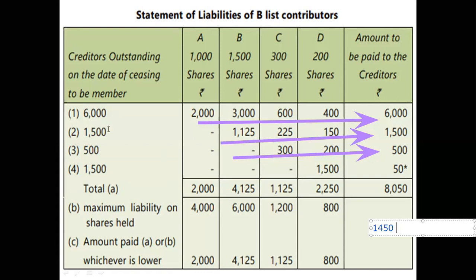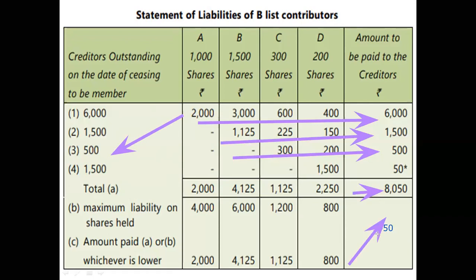9500 rupees — incremental. 9500. And the recovery: 8050. 1450 — the recovery is not able to pay creditors and there is a deficit. There is no creditors, so the benefits of the B-list are simple — I will not be able to answer the question.